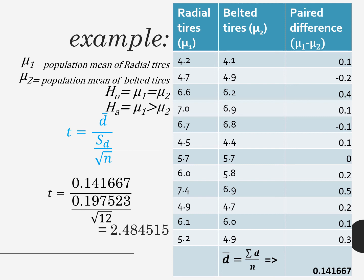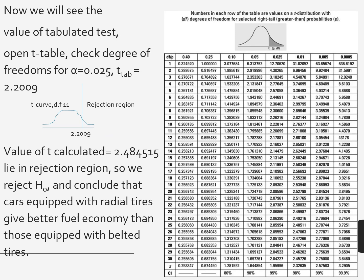Now we will see the value of the tabulated t test. Since our n equals 12, our degree of freedom would be n minus 1, which is 11. We will see what is the tabulated value of 11 at 0.025. It is 2.2009. You can see.